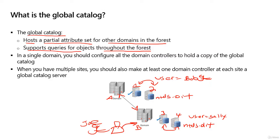So let's say this domain controller here, domain controller one — I'm going to say GC for global catalog. Down here, domain controller three is also a global catalog server. What that means: not only does domain controller three replicate objects to and from domain controller four, now it also replicates objects from domain controller one, the other global catalog server.